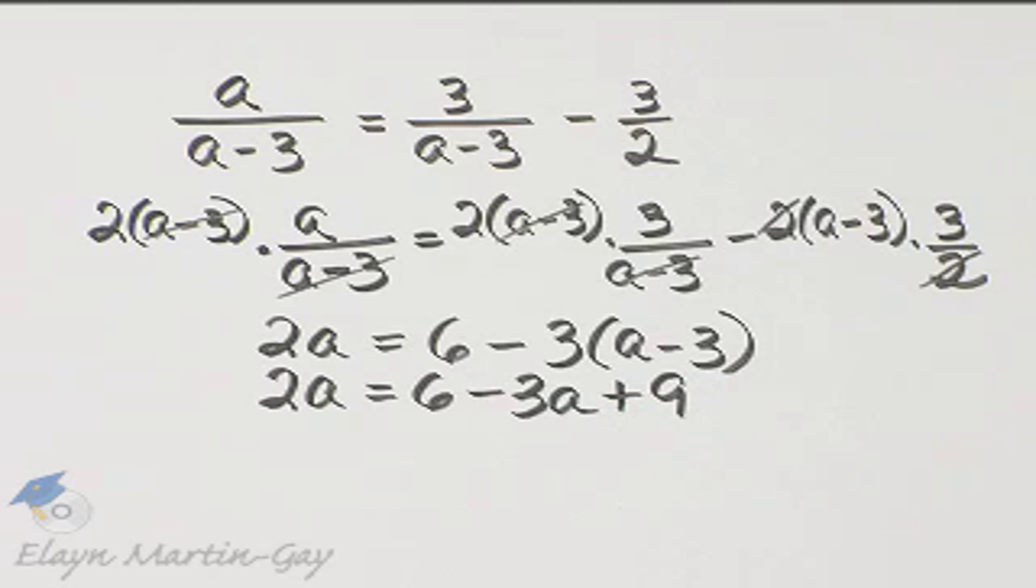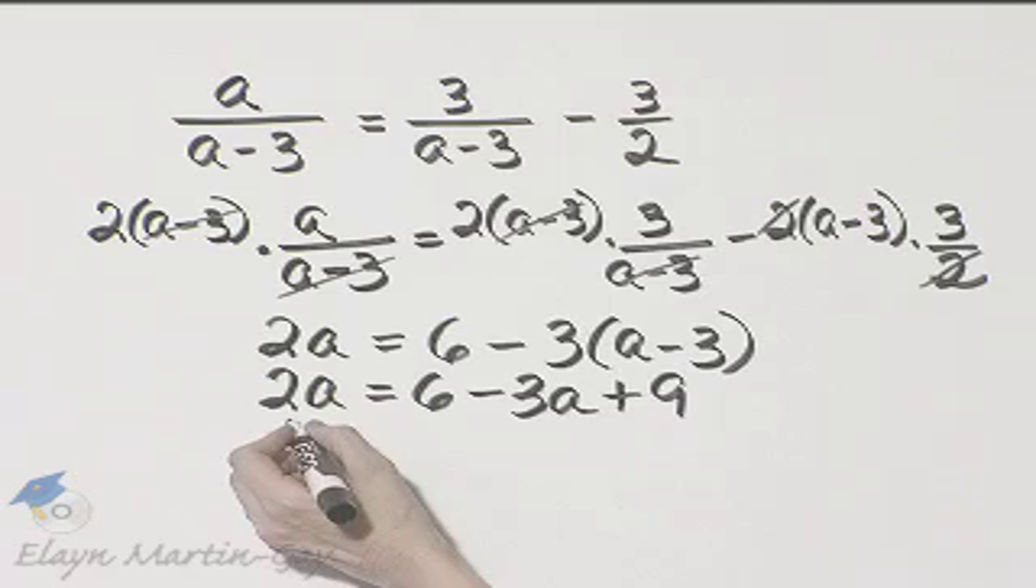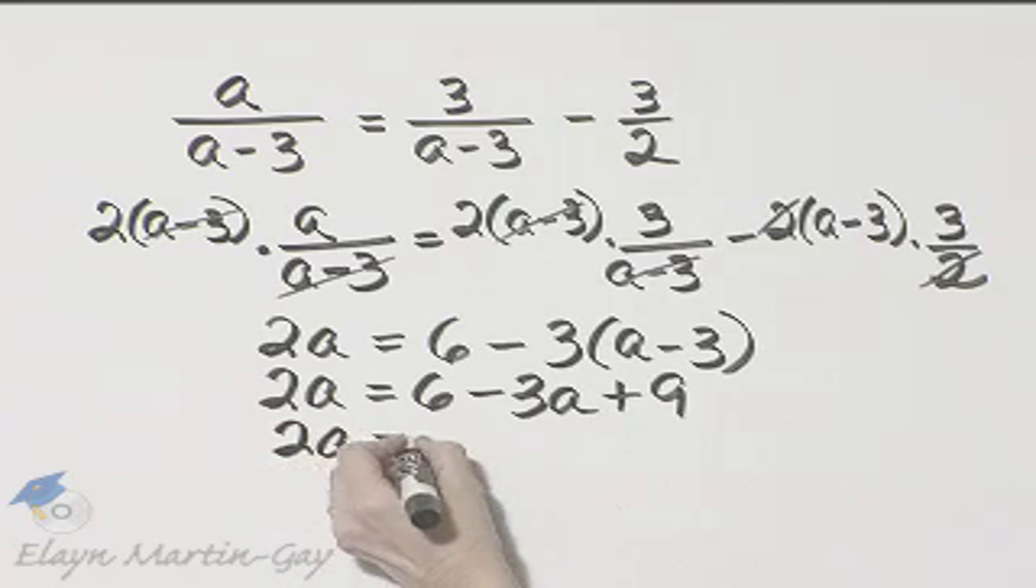Do we have any like terms on either side of the equation? The answer is yes. On the right side, 9 plus 6, that's 15. And then I have minus 3A.